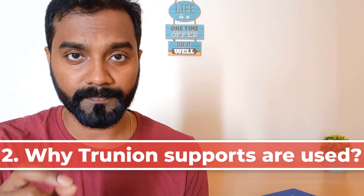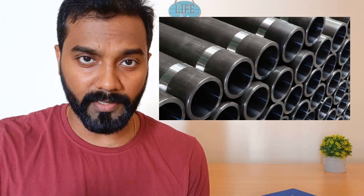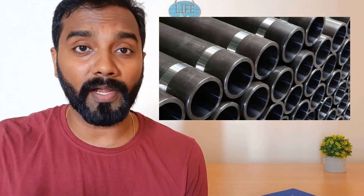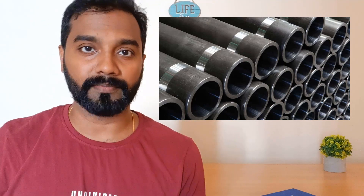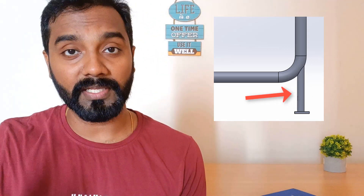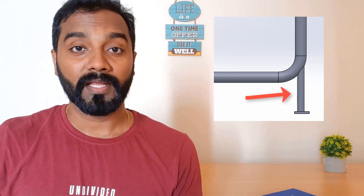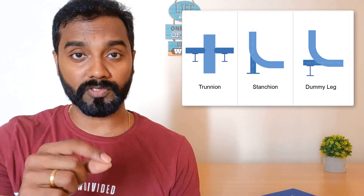Now let's move on to point number two: why are we using trunnion pipe supports in piping design, and why can't we replace them with any other support? Before answering, you have to understand something called optimization. In any project, we buy many different sizes of pipes, and during construction, lots of pieces of pipe are wasted. In order to optimize this wastage, you can use that waste pipe material as trunnion supports. This is one of the key factors why trunnion supports are used — you don't have to buy any additional material other than pipe.